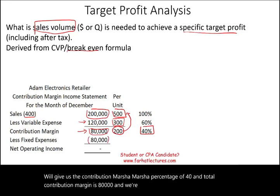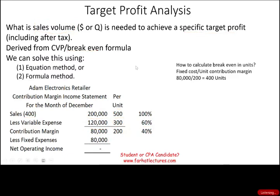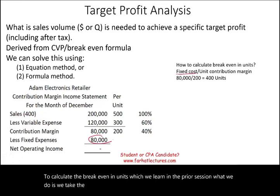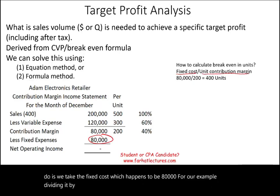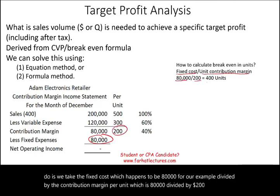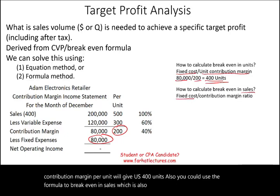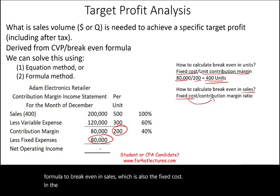We assume fixed expenses are $80,000; therefore, Adam will break even. To calculate break-even in units, we take the fixed cost of $80,000 divided by the contribution margin per unit of $200, giving 400 units. You can also use the formula for break-even in sales: fixed cost divided by the contribution margin ratio, which gives sales of $200,000.